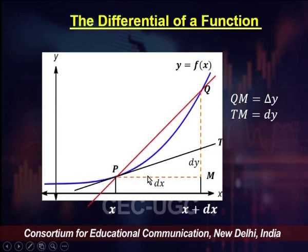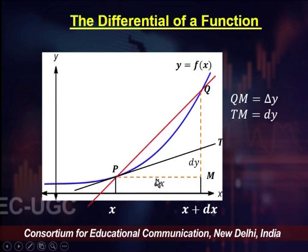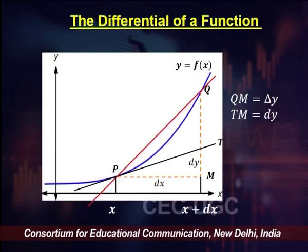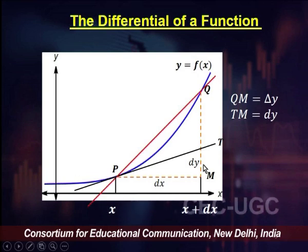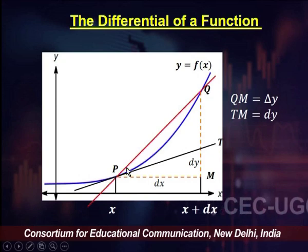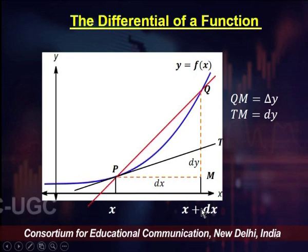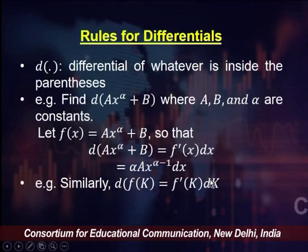The slope of tangent pt is f prime of x, and dy/dx equals f prime of x, so dy equals f prime of x times dx. In the picture, dy is represented by the height tm. You can clearly see that the actual change in y, delta y, is different from dy, but if we bring q closer and closer to p — making dx arbitrarily small — then dy and delta y will converge. So dy converges to delta y as dx becomes arbitrarily small, but the bottom line is that dy equals f prime of x times dx.